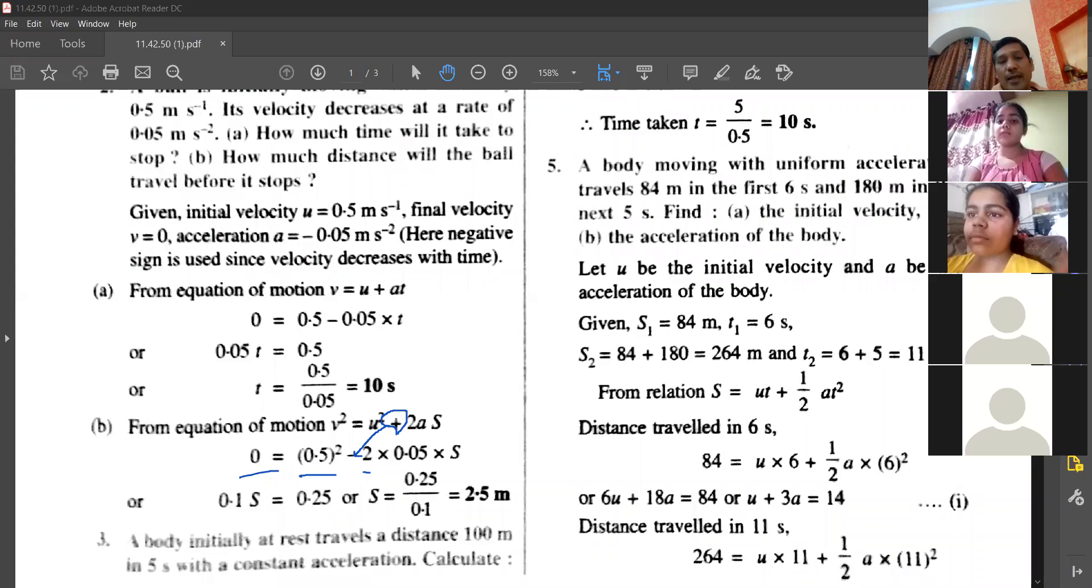So for the value of a as minus 0.05, calculate, you got s equals to 2.5 meters. That means body will come to rest after traveling 2.5 meter distance. I hope the question is clear to you all. Yes, sir.